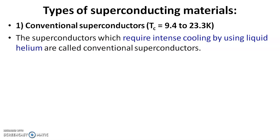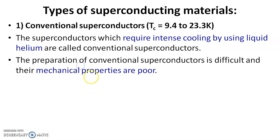Among various elements, niobium displays the highest critical temperature of approximately 9.4 Kelvin, and therefore niobium and its alloys are used as conventional superconductors. The preparation of conventional superconductors is very difficult because there is a need to use liquid helium for cooling, and the conventional superconductors have poor mechanical properties. This is one of the limitations of conventional superconductors.